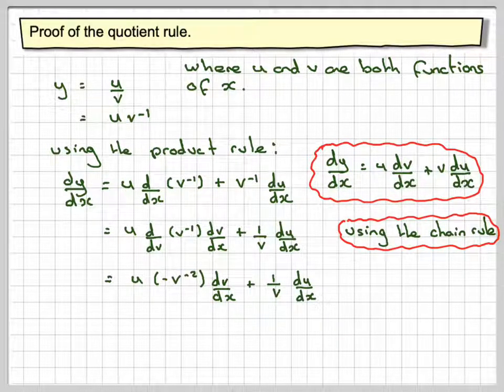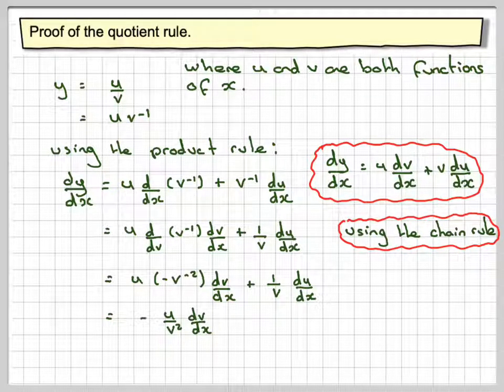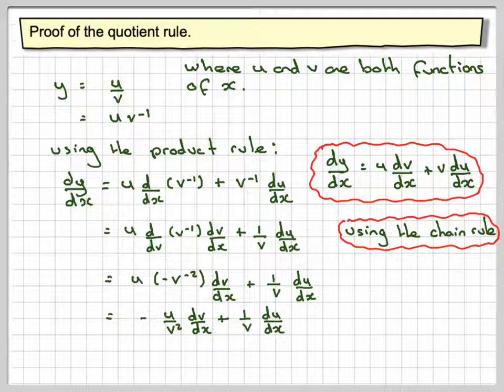So this now becomes minus u over v squared dv by dx, plus 1 over v du by dx.